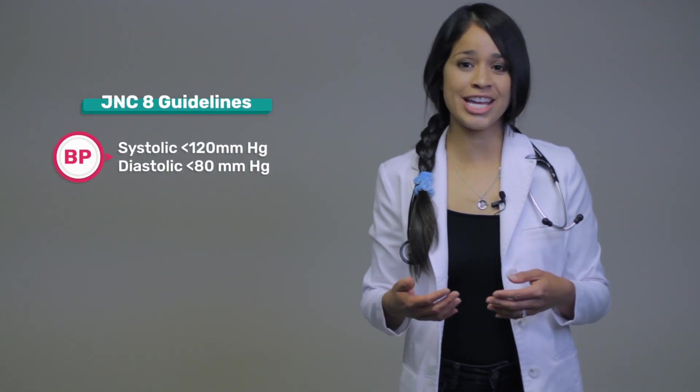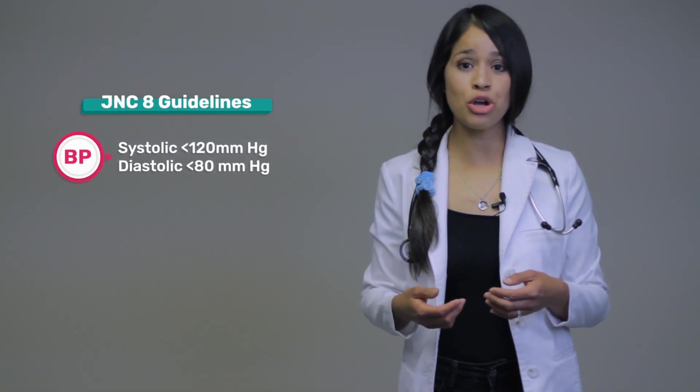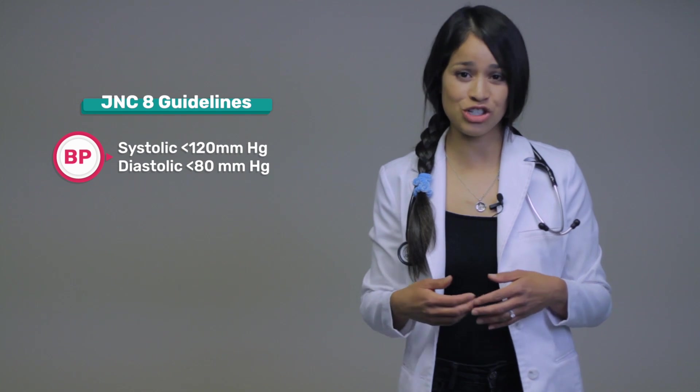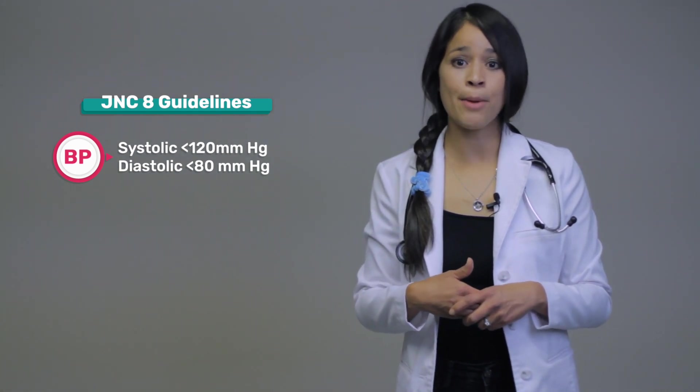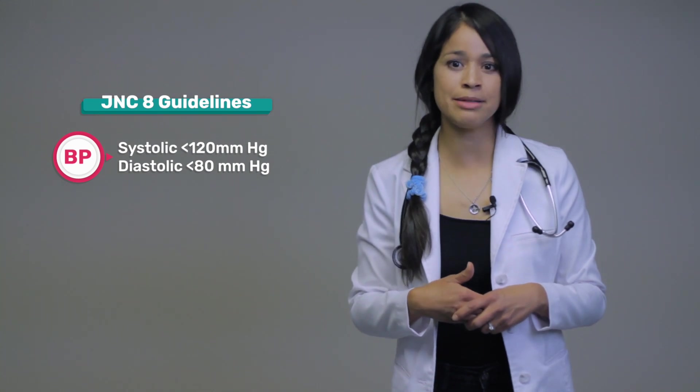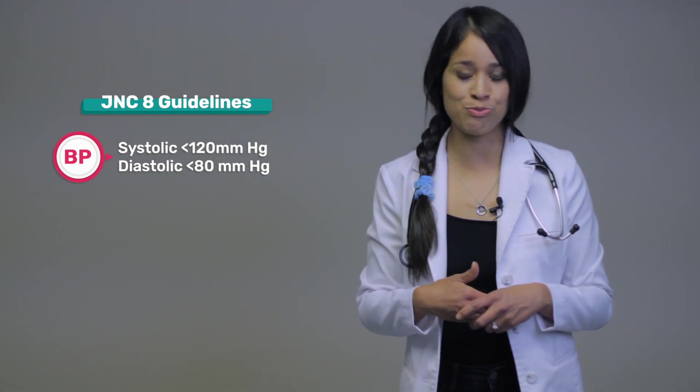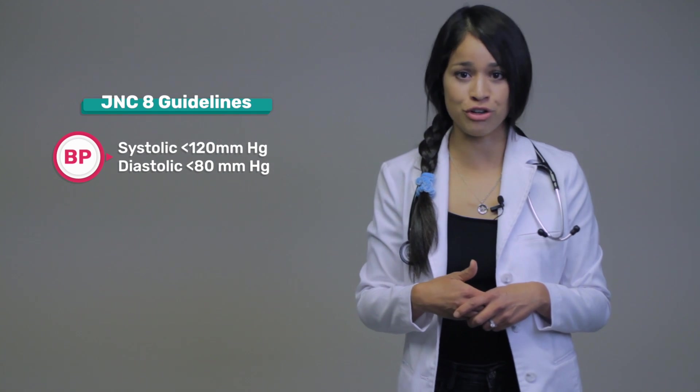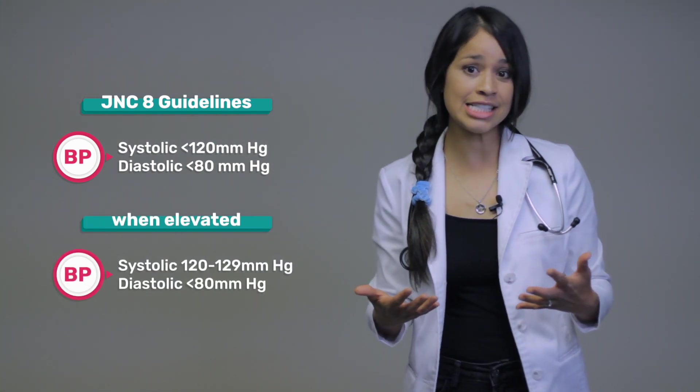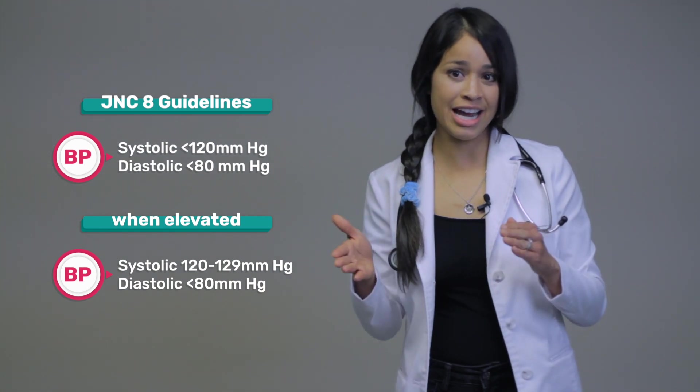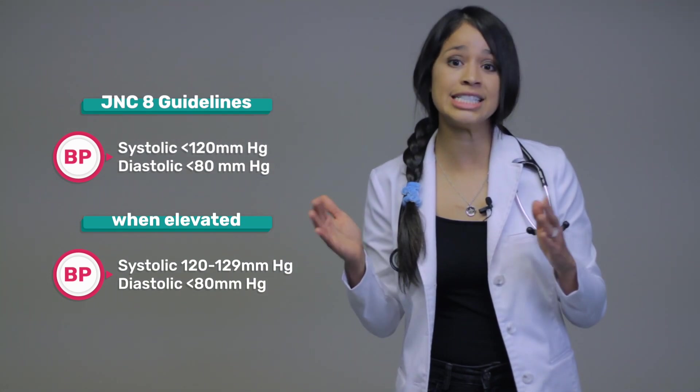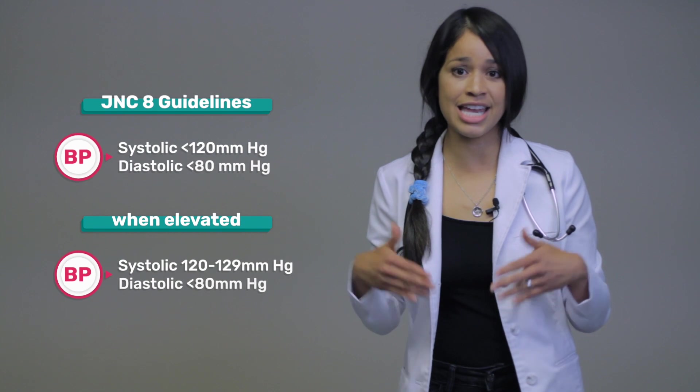So according to the JNC-8 guidelines, also known as the Joint National Committee, a normal blood pressure is a systolic below 120 millimeters of mercury and a diastolic blood pressure below 80 millimeters of mercury. When elevated, a systolic blood pressure is between 120 to 129 millimeters of mercury and a diastolic blood pressure less than 80.